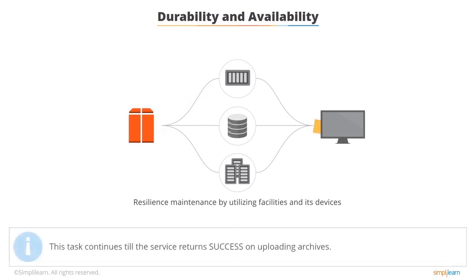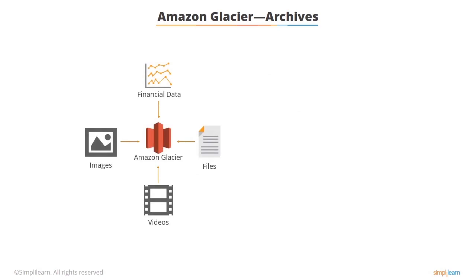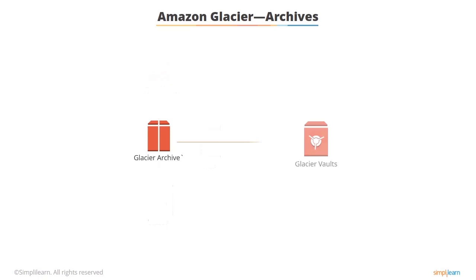The task continues until the service returns success on the uploading archives. Any individual object archived into Amazon Glacier — such as a document, video, or any other type of file — is referred to as an archive. Each archive has a unique ID assigned to it by AWS. The archives are stored in vaults. A vault is addressed by a unique name assigned by its creator, and a given AWS account may create up to 1,000 vaults in Amazon Glacier.